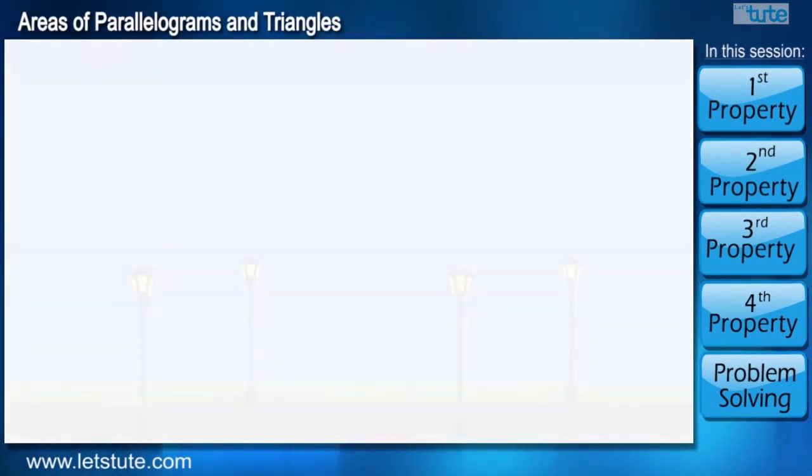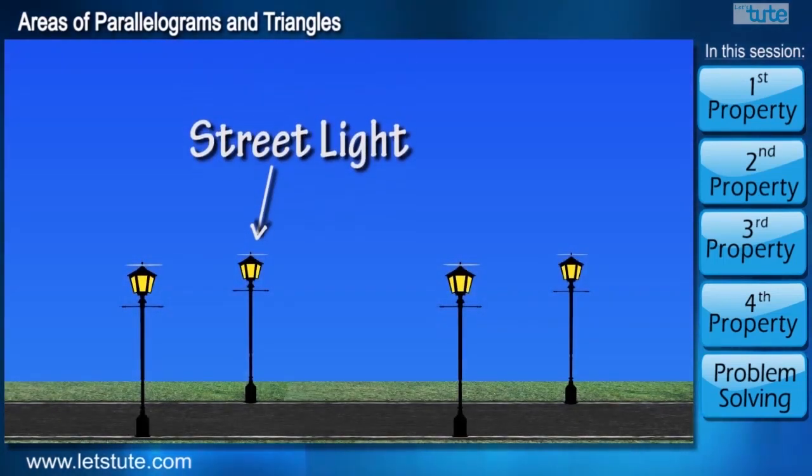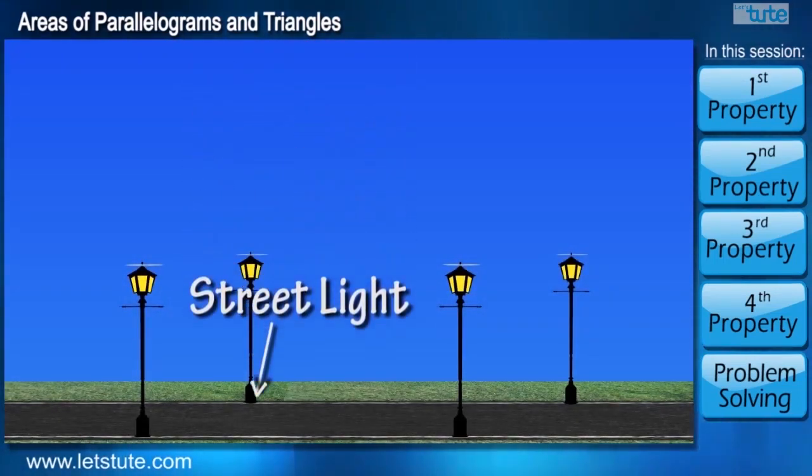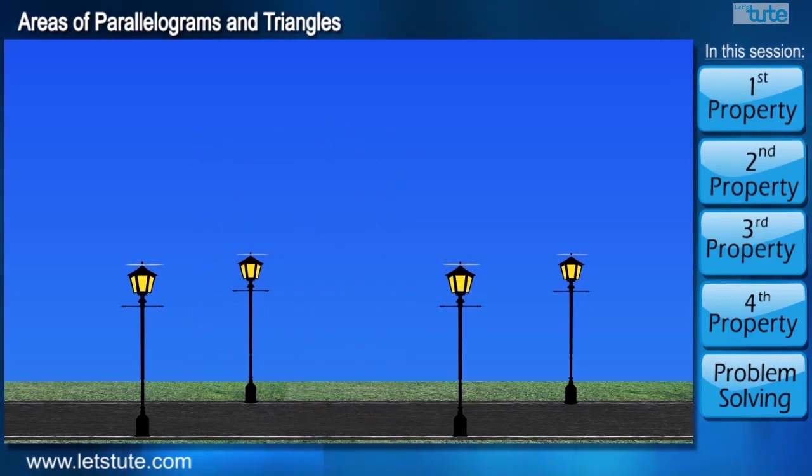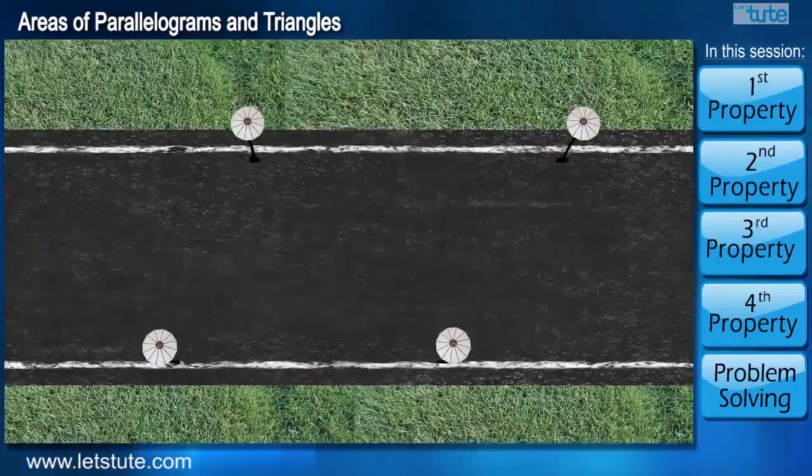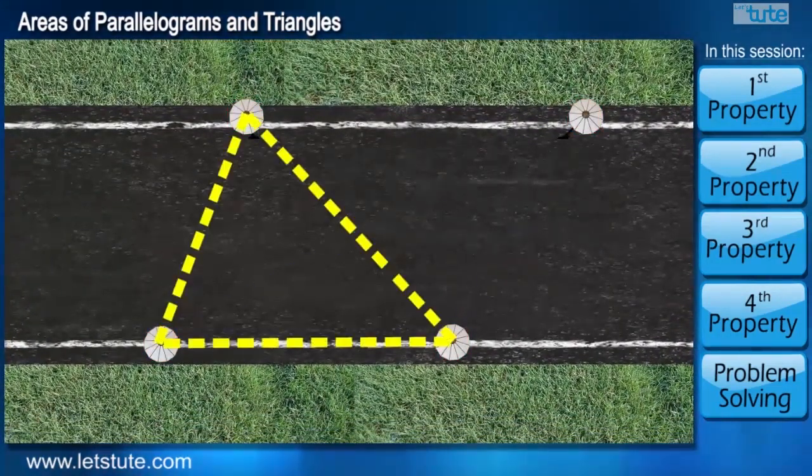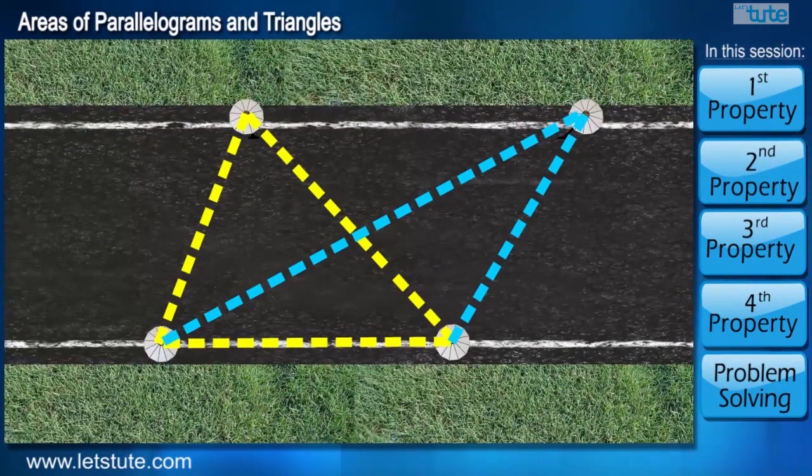Here you can see a road and on both sides of the road there are street lights. Using this situation, let's see what we can come up with. Consider there are two poles on both sides of this road and let's draw two triangles by joining these poles.